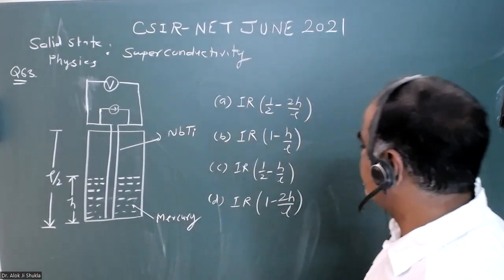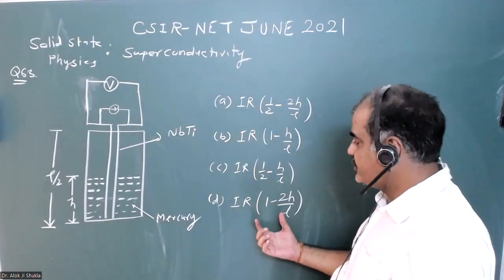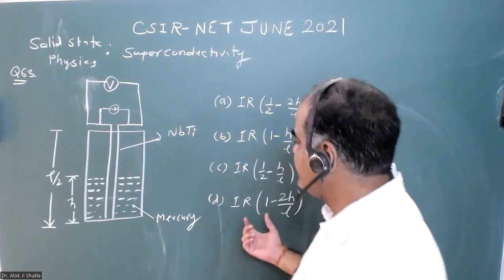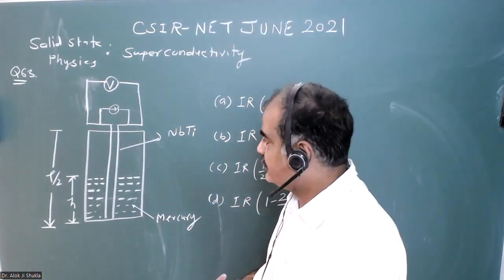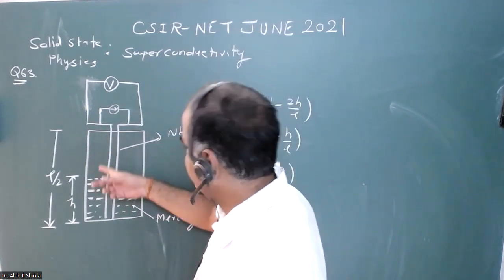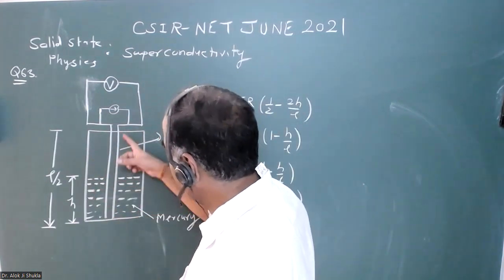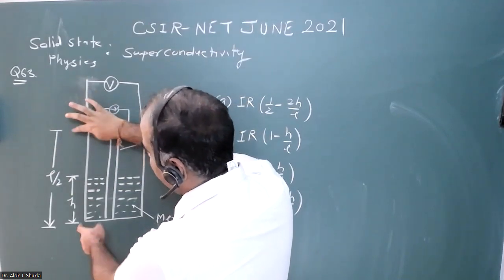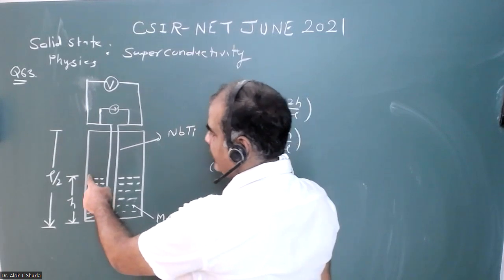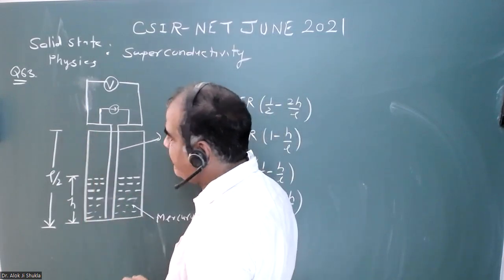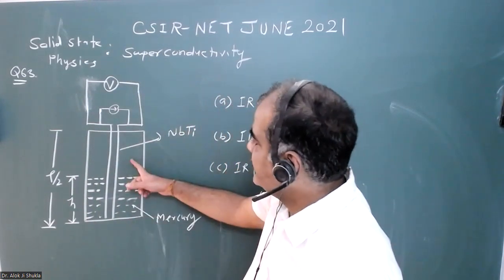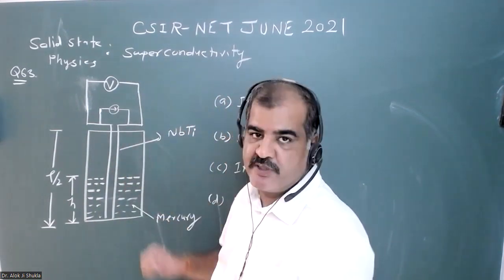We can see in the diagram there is total length L. This total length is from here up to this container. The container length is L/2. If we fill this container full up to its maximum height and cool down this wire, then the resistance should be zero.